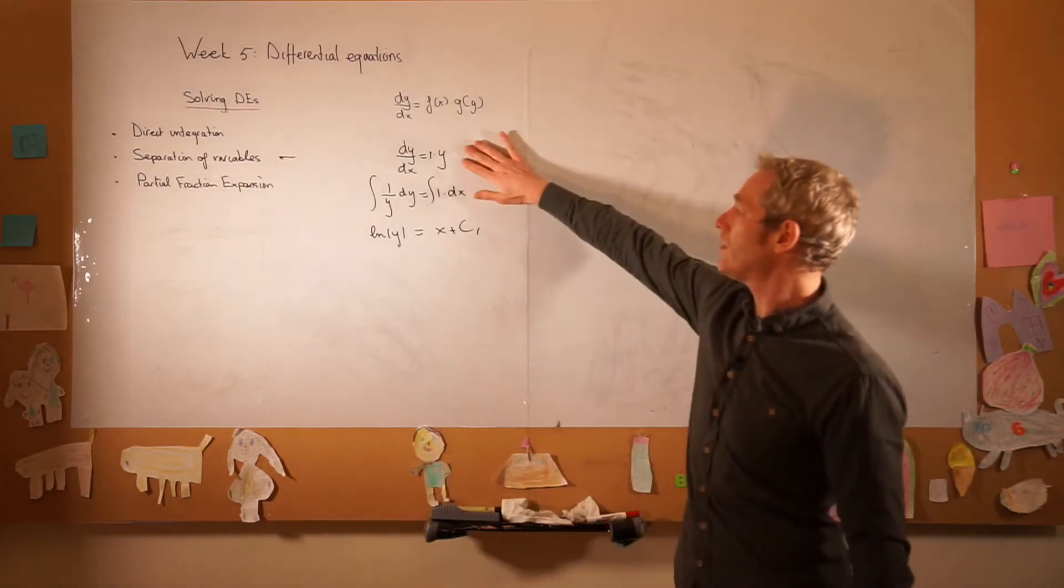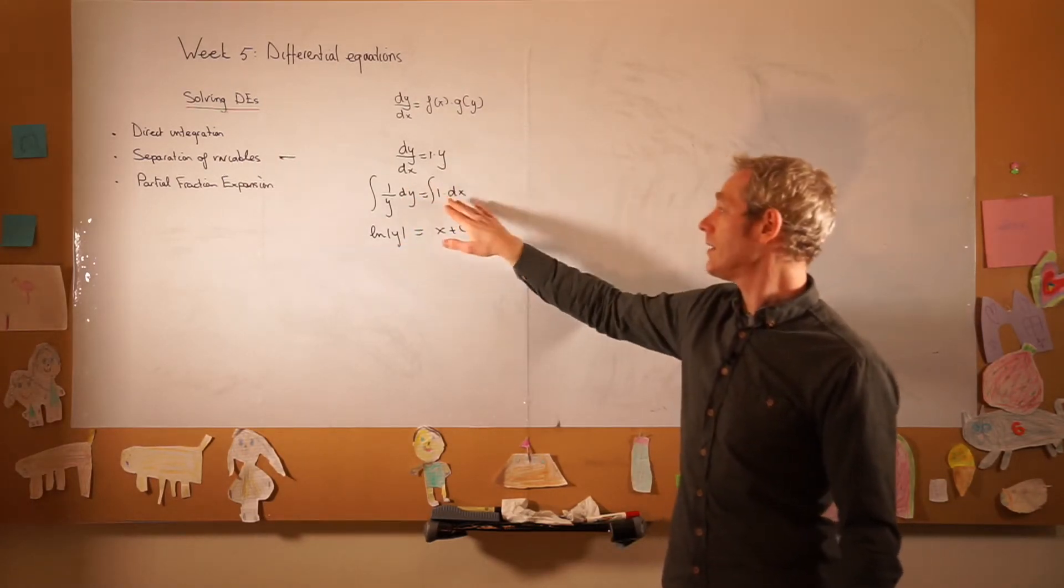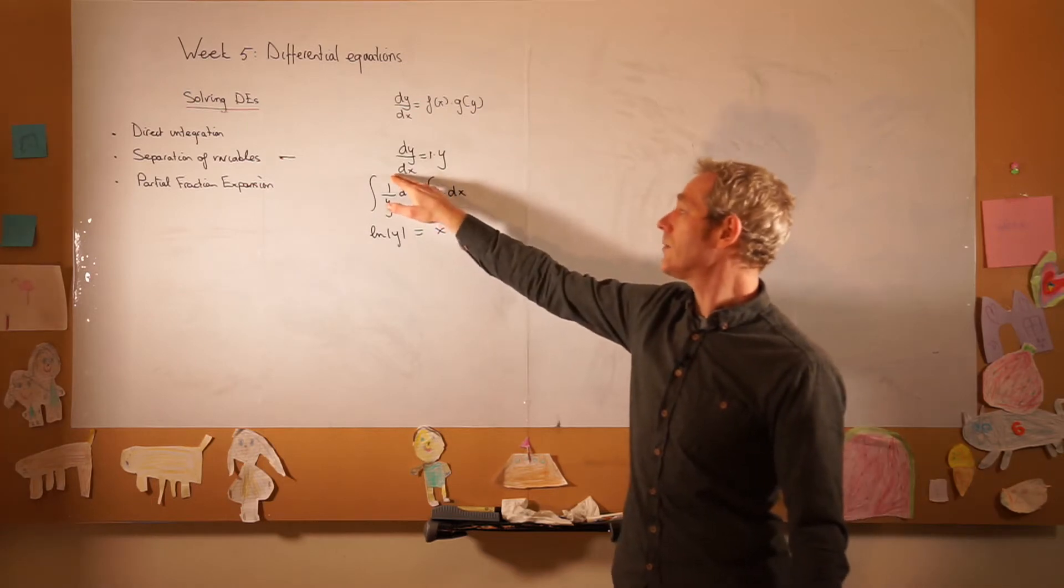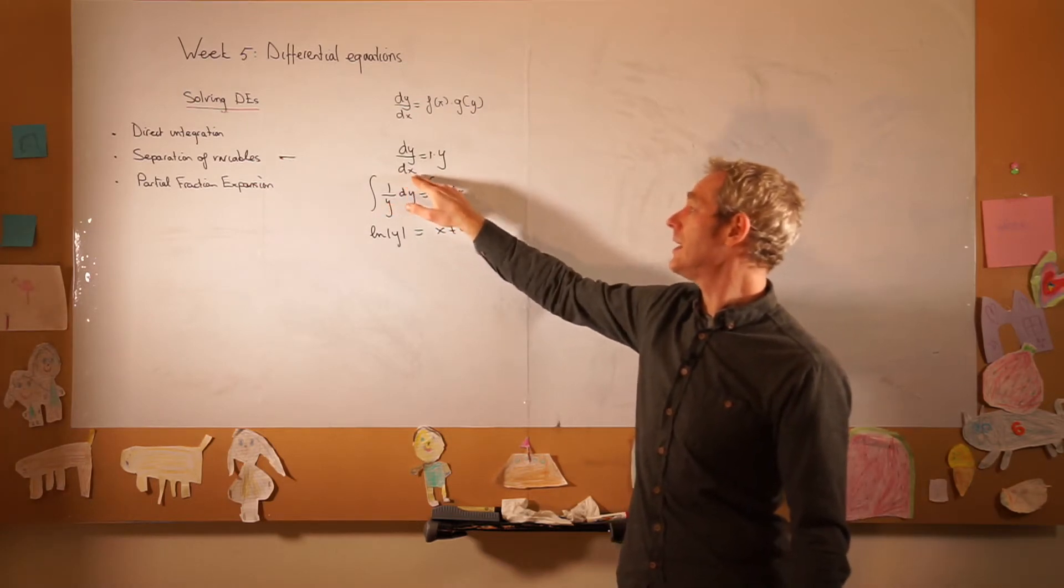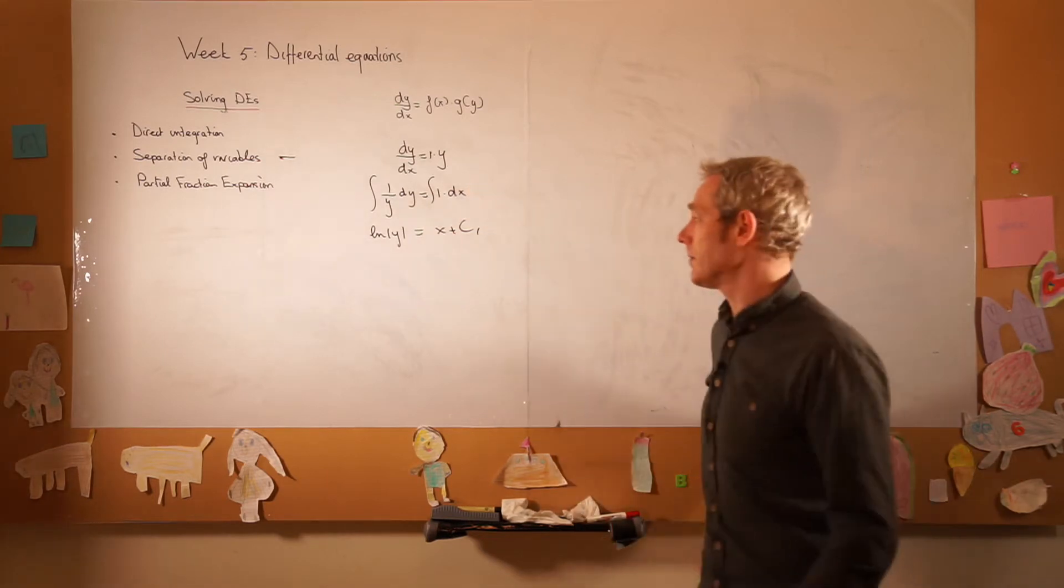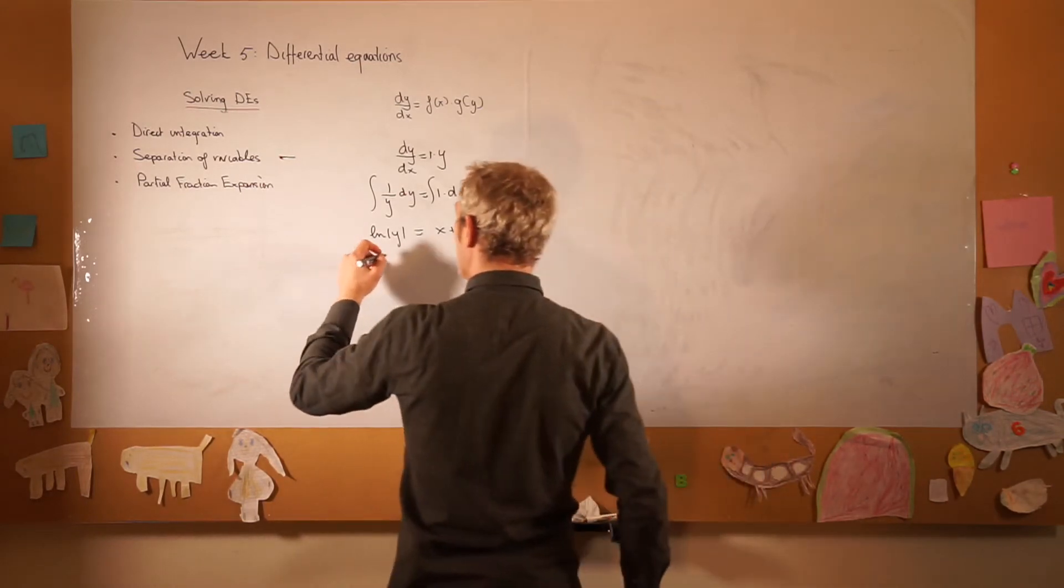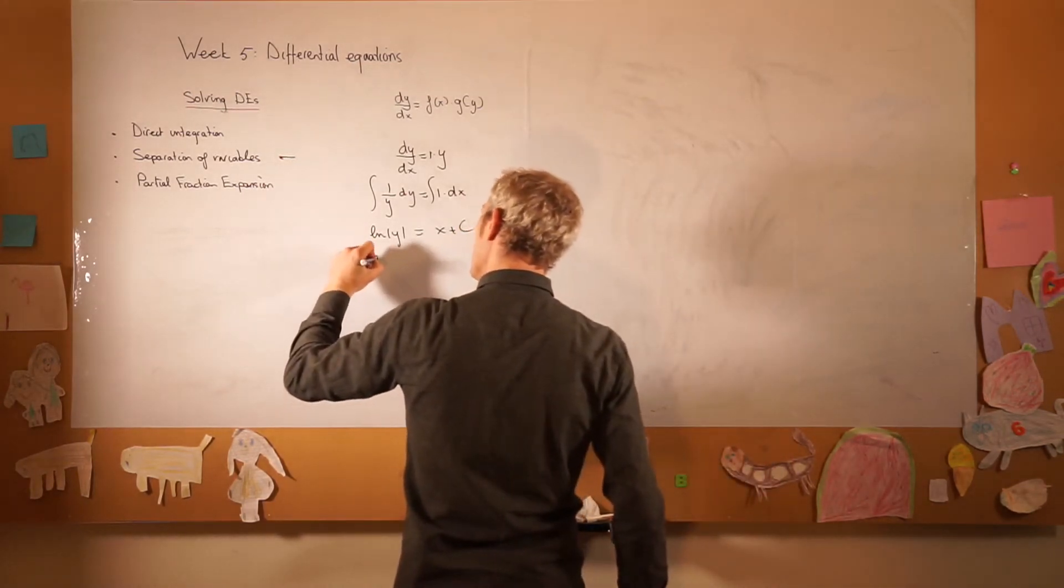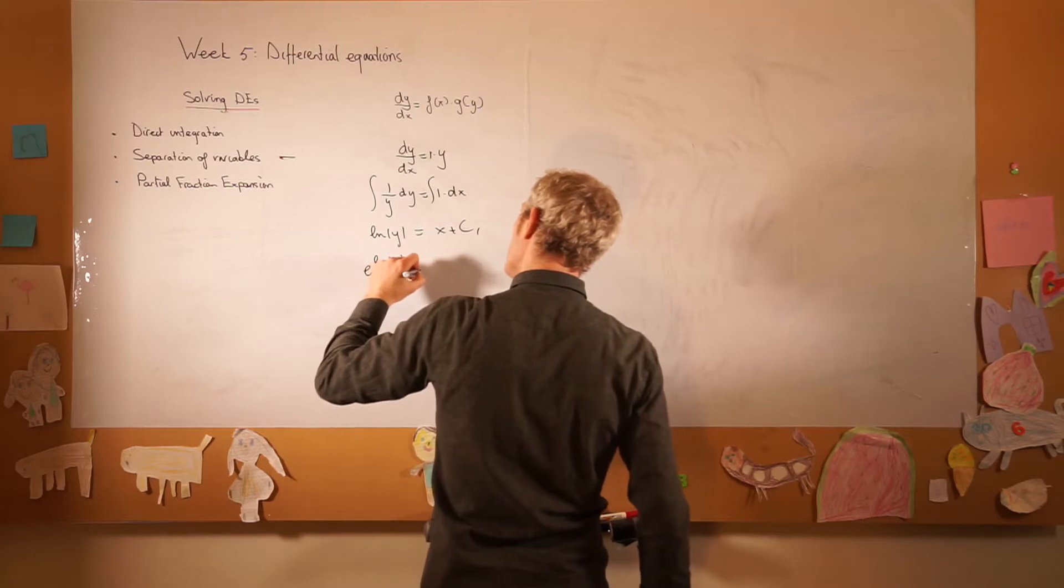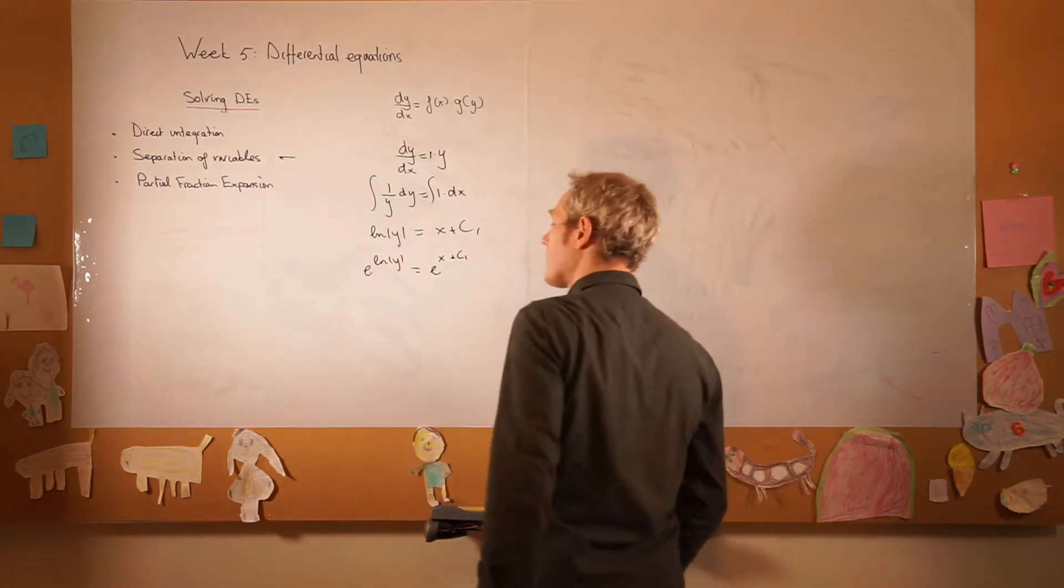So we went from the differential equation, separation of variables where everything with y goes left, everything with x goes right. Of course here we had to multiply left and right for the dx to end up there, but that's just an algebraic manipulation.